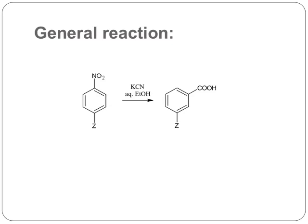Now I will explain what cine substitution means. In the product, the nitro group is not present — there is elimination of the nitro group. In the starting material the Z group and nitro group are at para positions, while in the product they are at meta position with respect to each other. The COOH group does not take the position of the nitro group; it takes the adjacent ortho position with respect to the nitro group. That kind of substitution is called cine substitution — C-I-N-E.